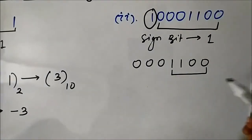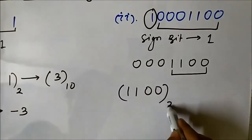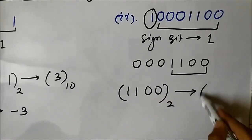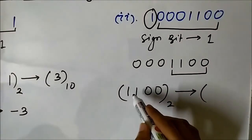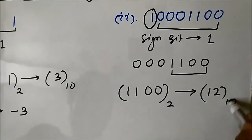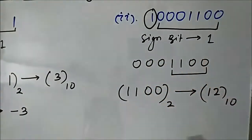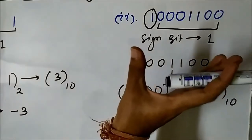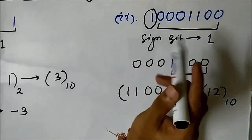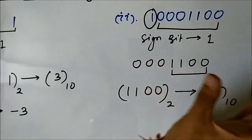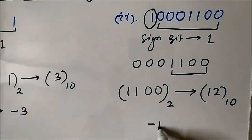So 1 1 0 0 in binary form: its decimal equivalent is 2 to the power 3 plus 2 to the power 2, which is 8 plus 4, that is 12. So the given number 1 0 0 0 1 1 0 0, represented in sign magnitude 8-bit format, has a decimal equivalent value of minus 12.